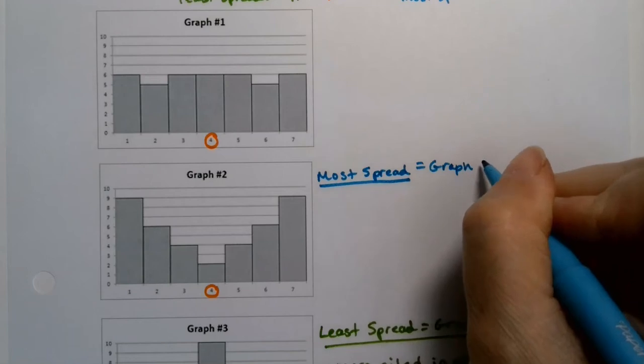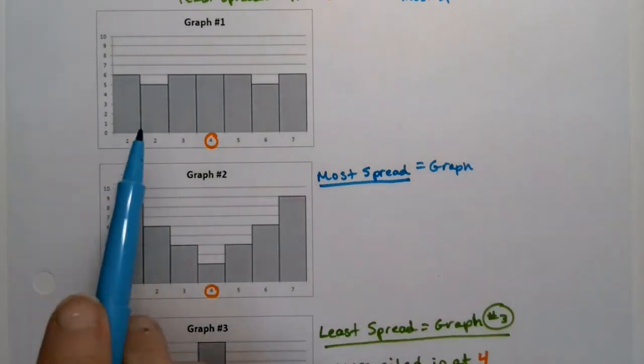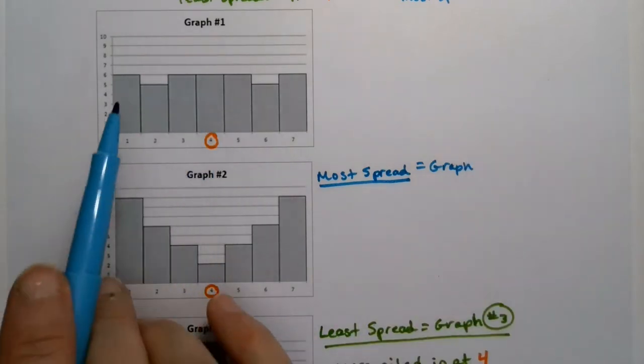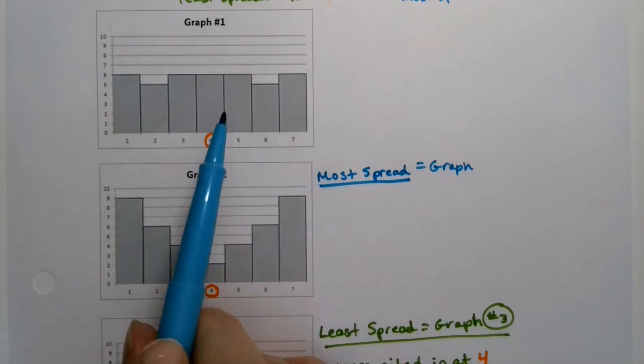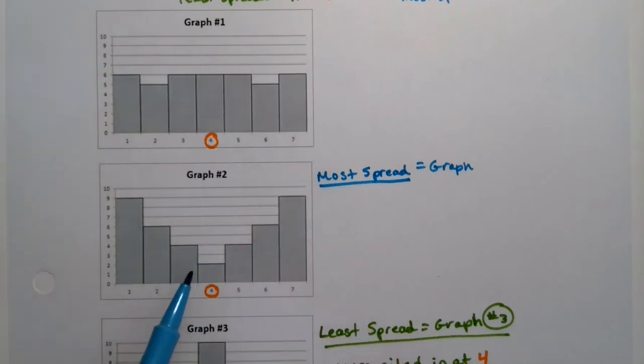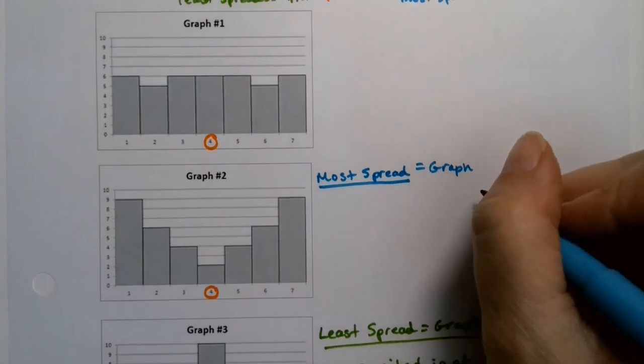Now, why? Because if you're thinking about it in terms of, like, spreading peanut butter, like, this graph number one's got a lot in all these other bins. True, but it has a lot in the center, whereas this graph does not, right?